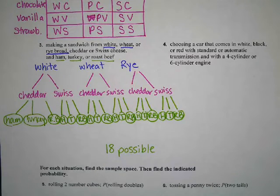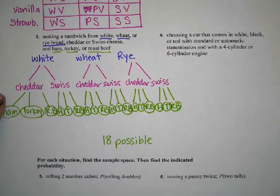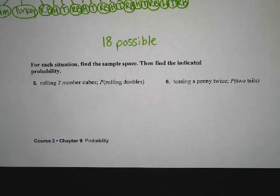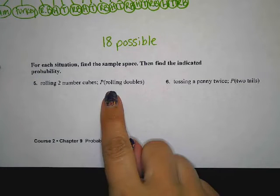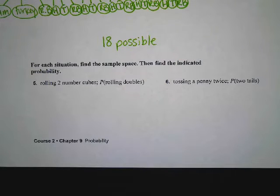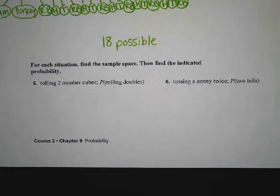Go ahead and work on numbers two and four on your own. Let's look at the bottom part — numbers five and six are doing the same thing, but this time we're going to be finding a probability at the end. Number five says rolling two number cubes, and we want to know the probability of rolling doubles.